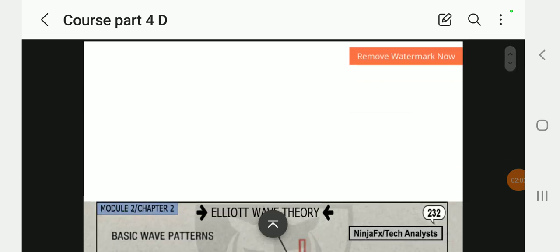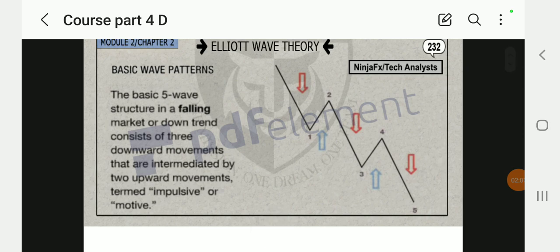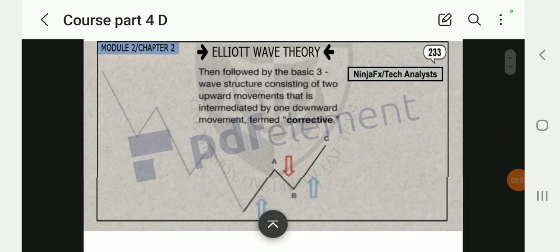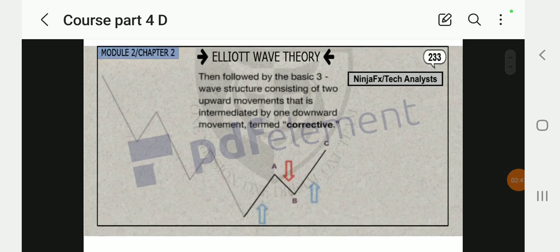The basic five-wave structure in a falling market or downtrend consists of three downward movements that are intermediated by two upward movements termed impulsive or motive. Same thing here but vice versa. In this case, we're looking at the downtrend, so the three red arrows are motives and the two blue arrows are the correctives. Then followed by the basic three-wave structure consisting of two upward movements that are intermediated by one downward movement termed corrective. The red arrow A-B is a corrective, then the two blue arrows are the motives.